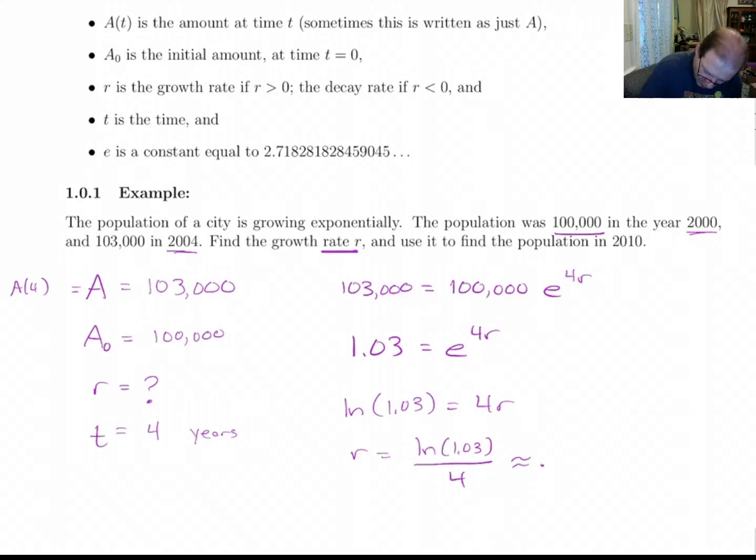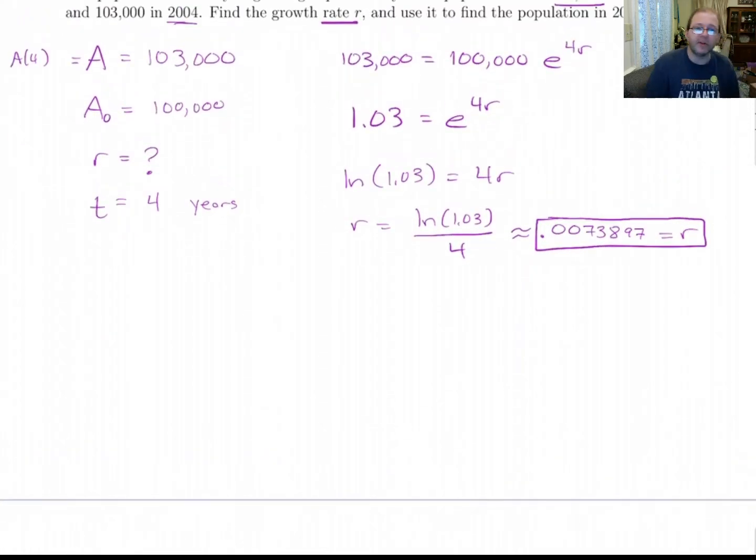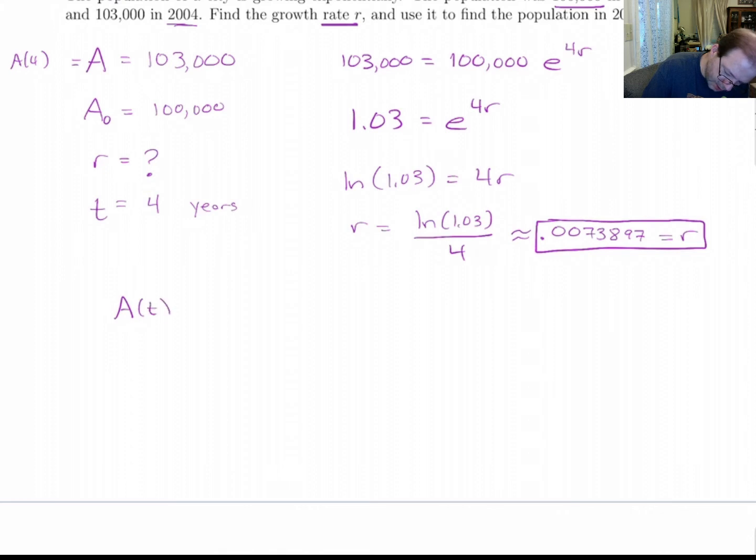And I get, I'm going to put a squiggly equal here because I'm going to truncate this, 0.0073897, etc. Now I'm actually going to leave that number with its full decimal expansion in my calculator. That's the answer to the first part of this. Now the second part says, use it to find the population in 2010. Now there are actually a couple of things we could do for this. Probably what I would do is just say my equation here is A of T equals 100,000 E to the R T, where R is this number over here.